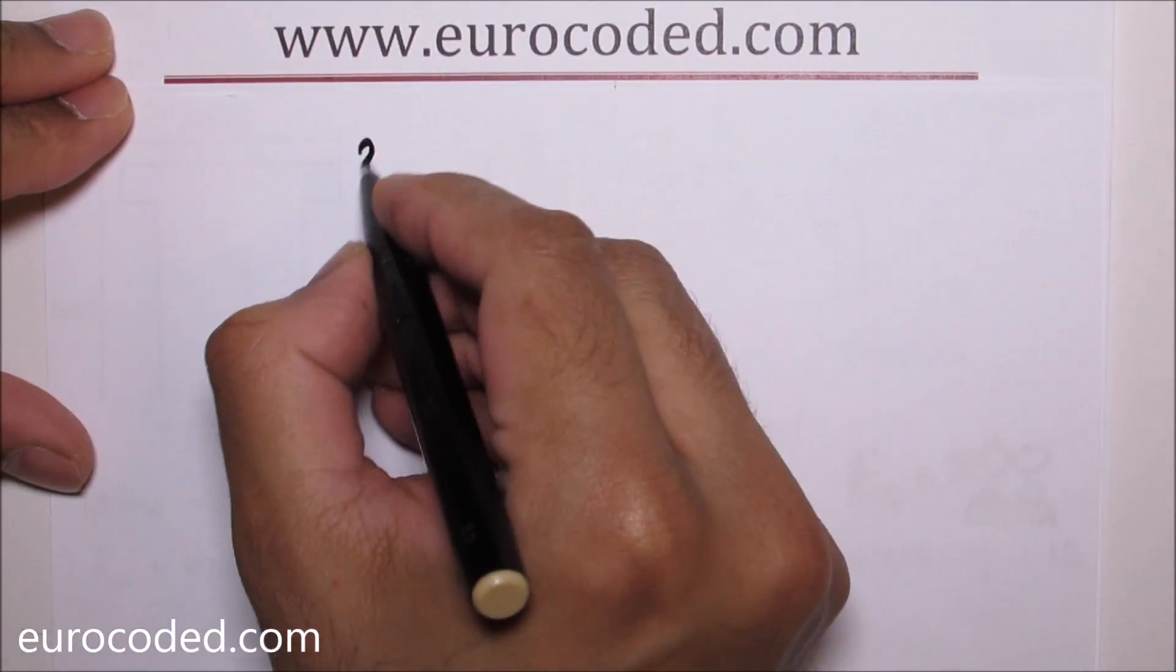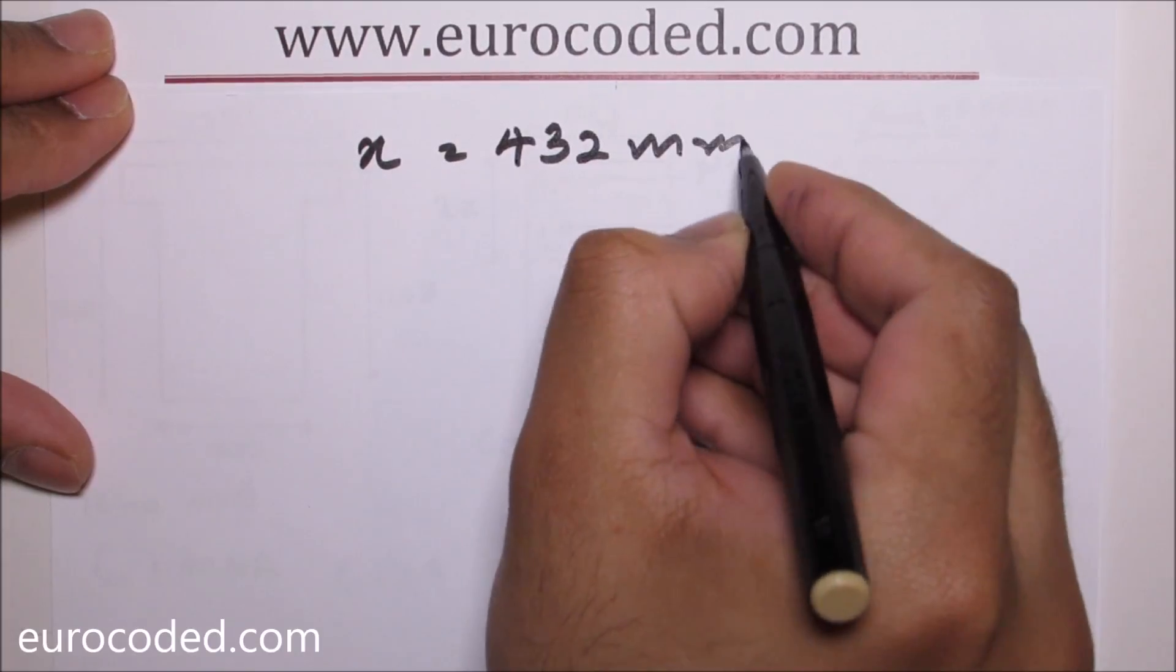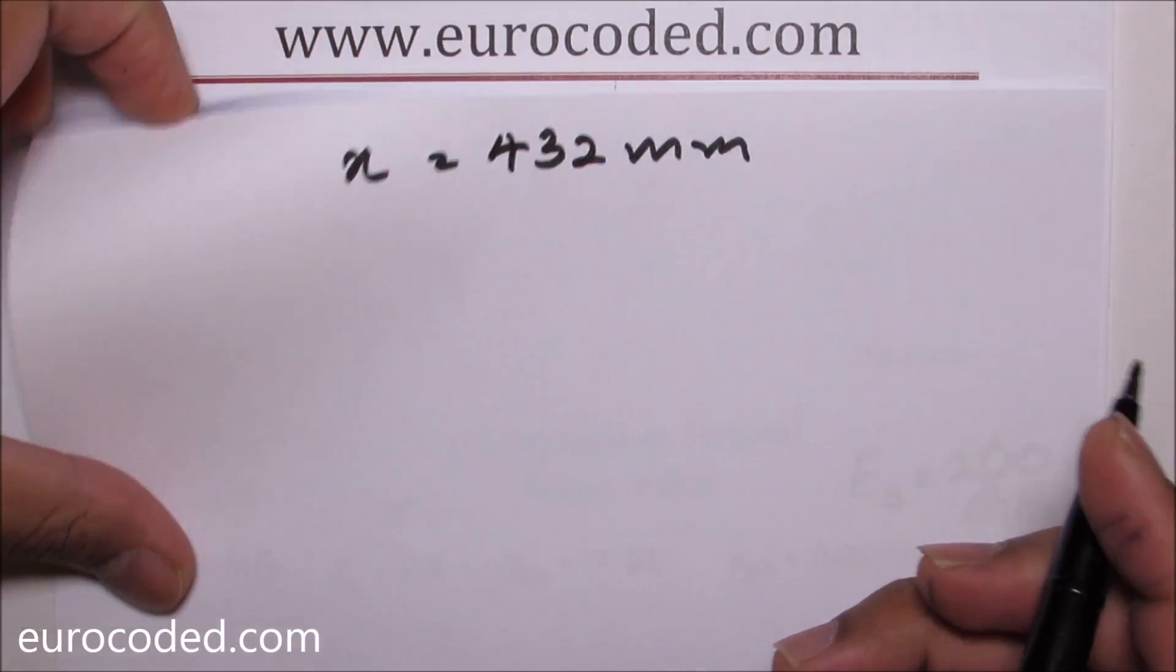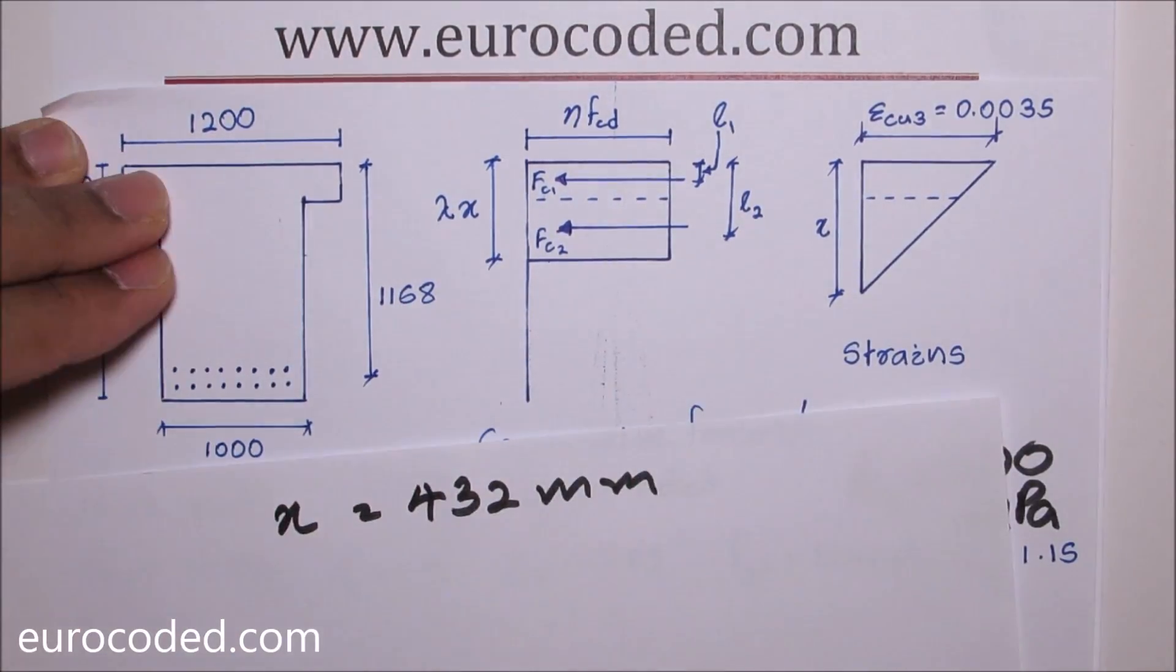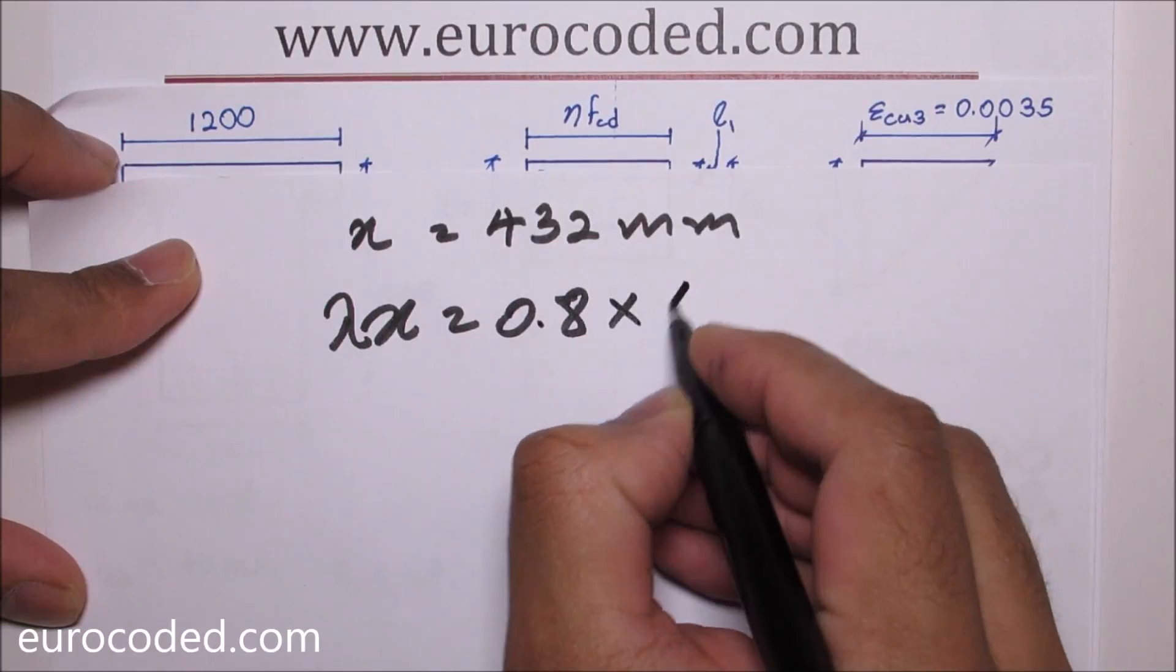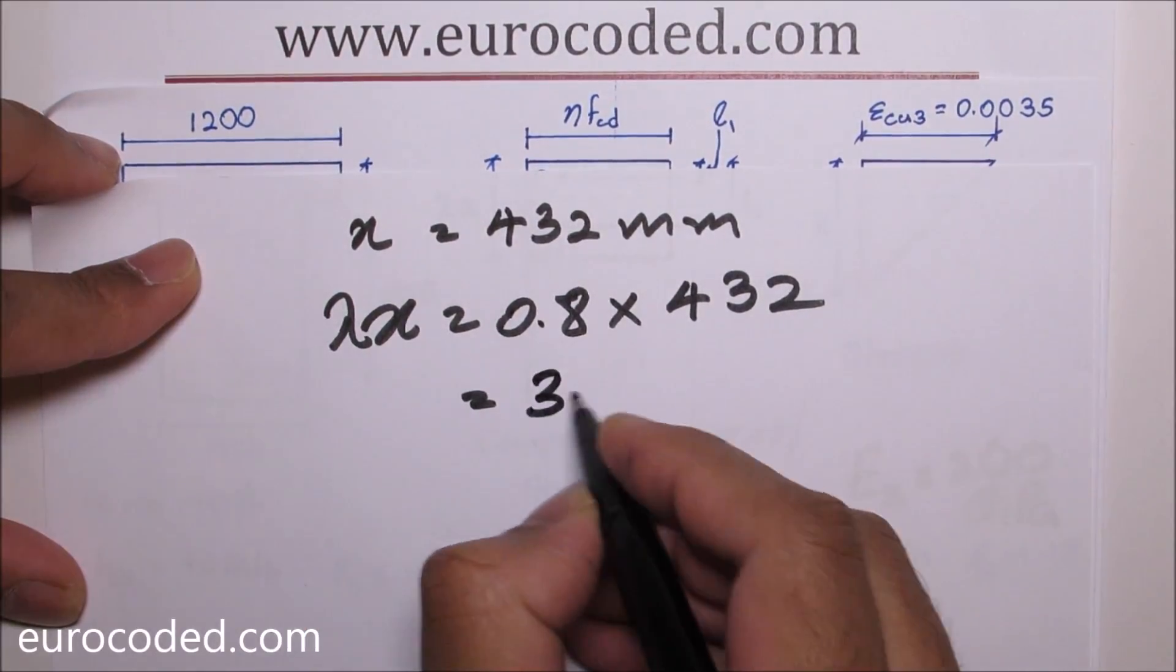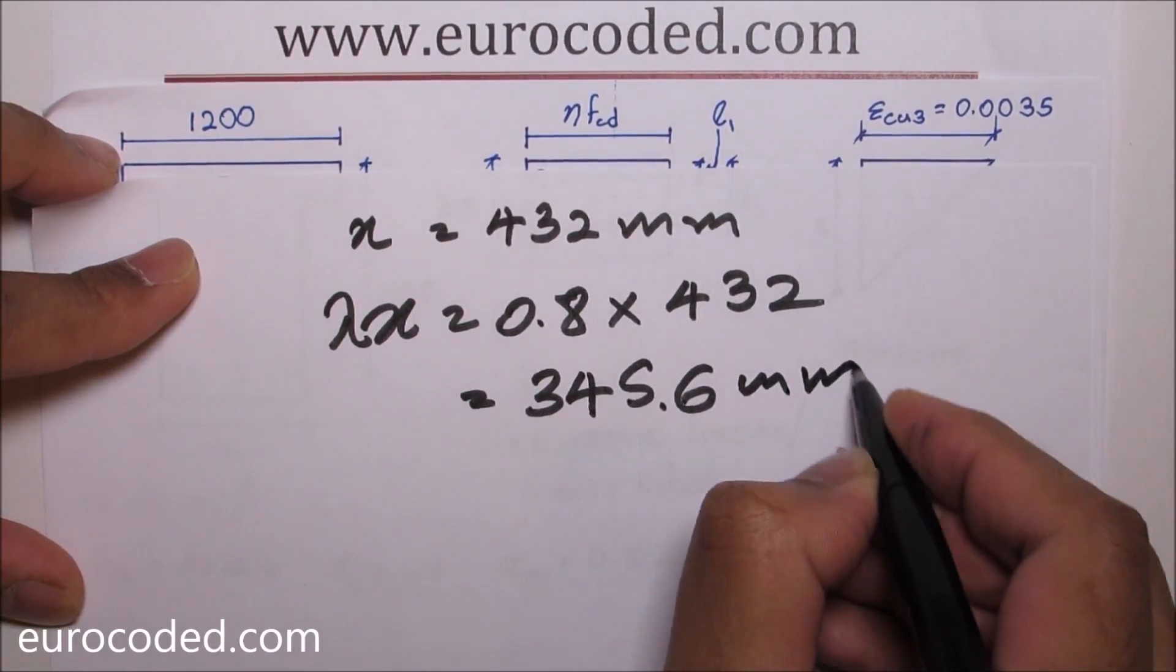Assume effective depth X is 432 millimeter. Hence we can calculate effective height of compression zone lambda X, which is equal to 0.8 times 432 which is 345.6 millimeter.